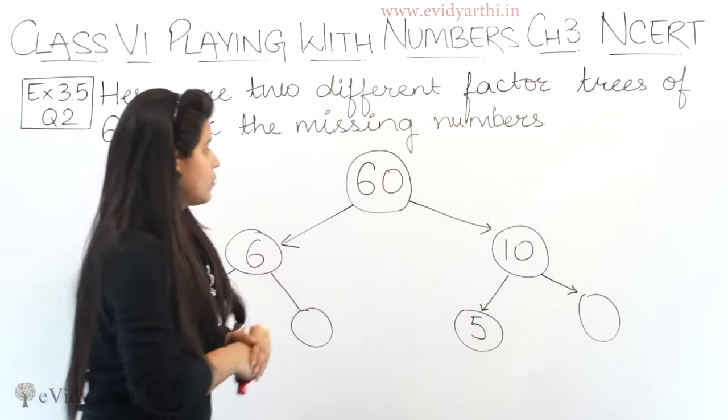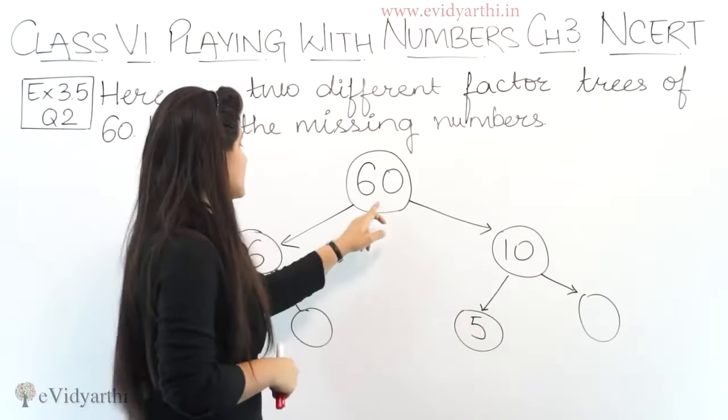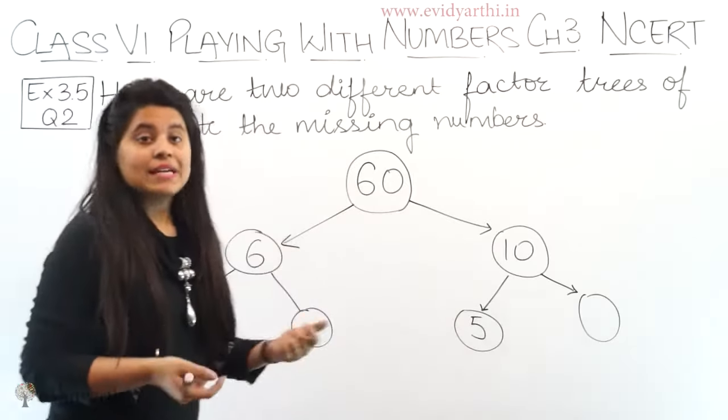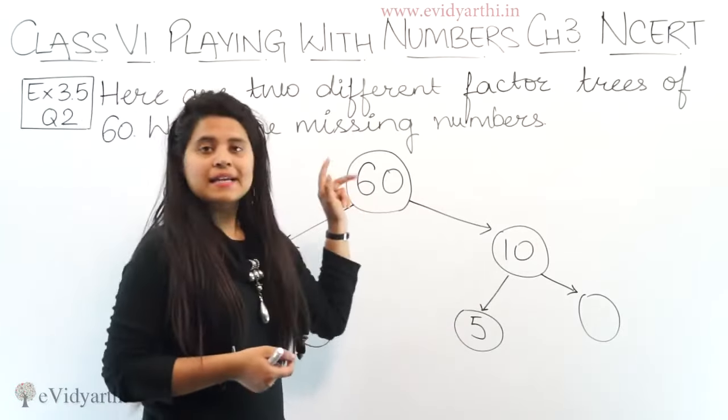First, if we study this factor tree, we divide 60 into two parts, so we write the two factors: 6 and 10. How is this? 6 into 10 is 60.